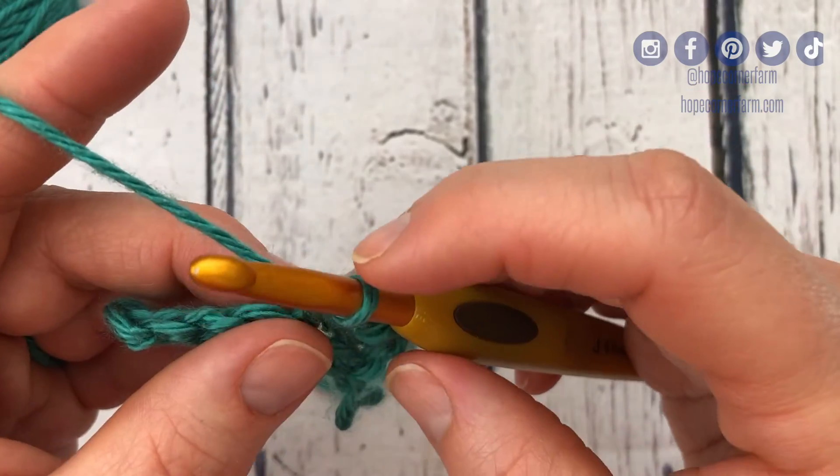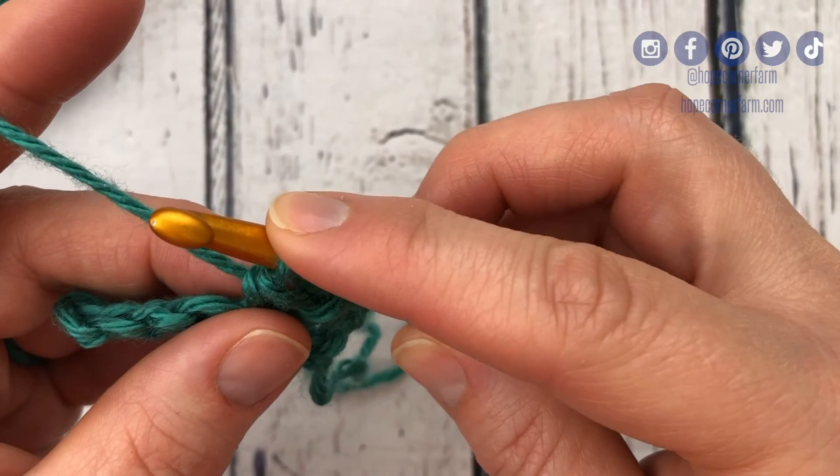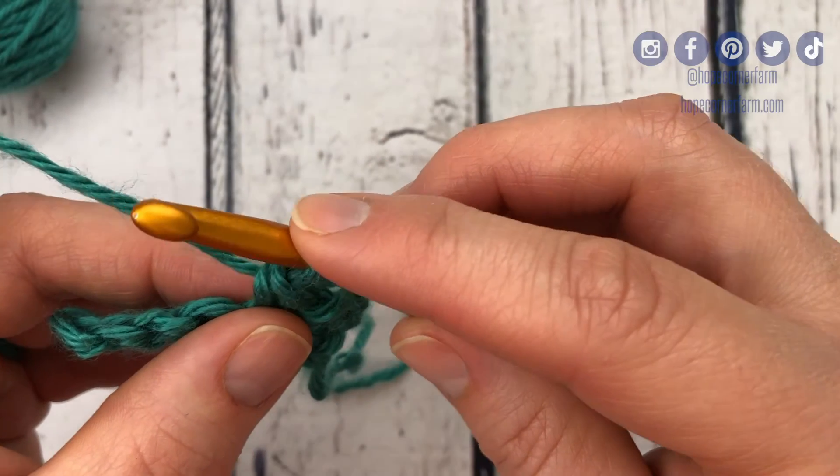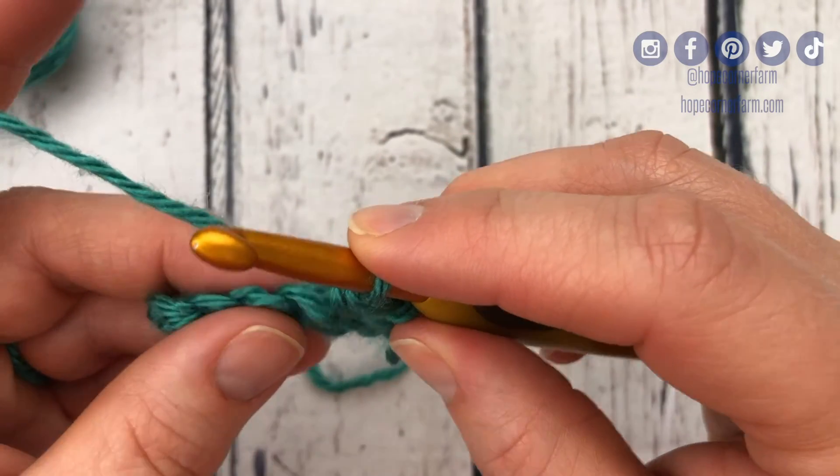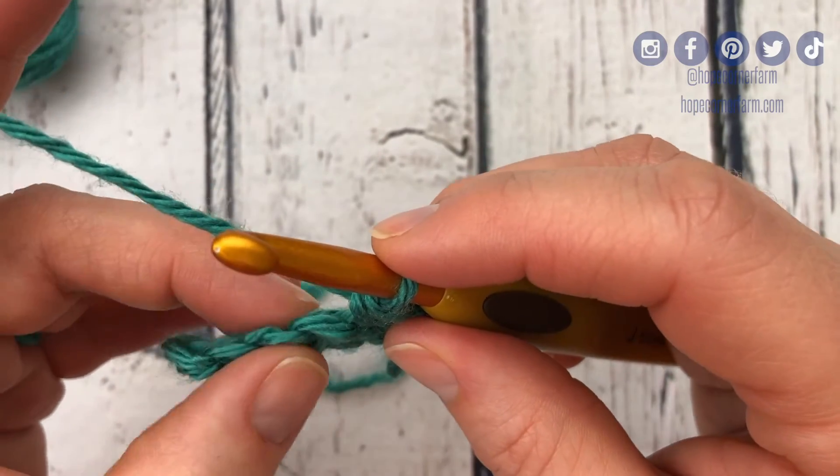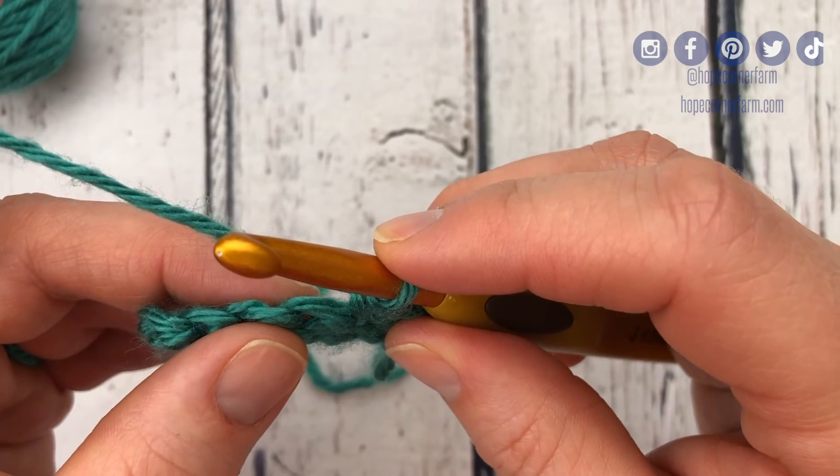Another way I help keep tension is I put my index finger here on this loop so it doesn't get too big or too small. It kind of helps keep a consistent spacing. I also am pinching the work here with my left hand to help keep things constant.